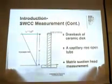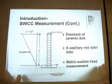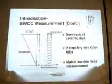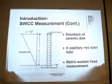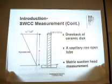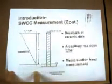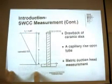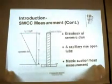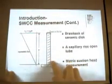For wetting SWCC measurement, because the ceramic disc offers too great resistance for water to flow into the soil sample, Tempe cells are not suitable for wetting SWCC alignment. A capillary rise open tube was used in this study to measure negative pore water pressure, which is equal to matric suction, because the air pressure in this tube is atmospheric.